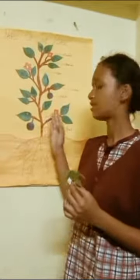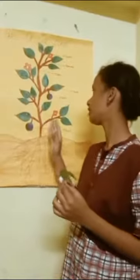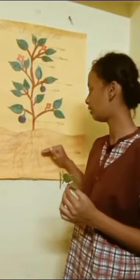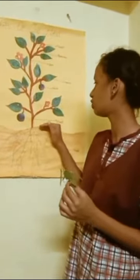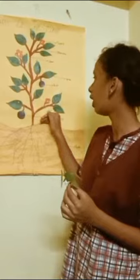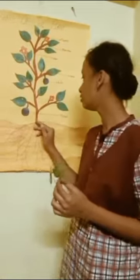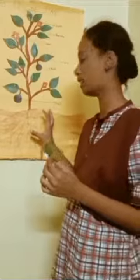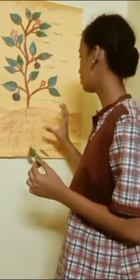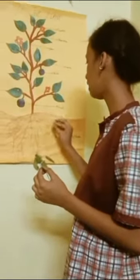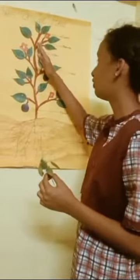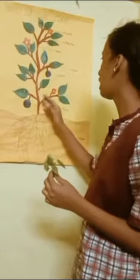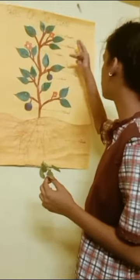Plant has different parts and they do various functions. The root usually grows under the ground and the shoot usually grows upward from the ground. The root absorbs all the minerals and water found in soil, which is required for the growth of the plant.